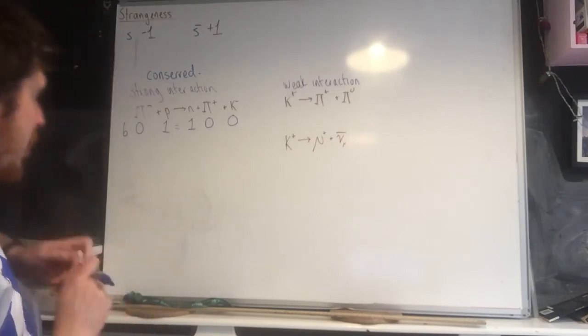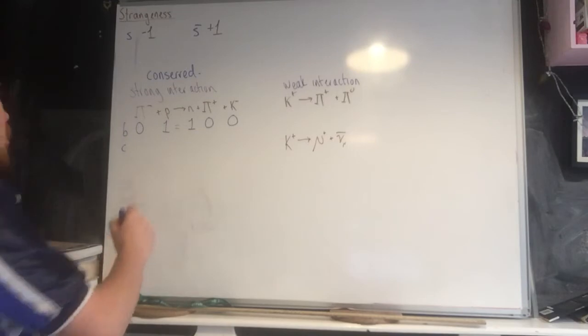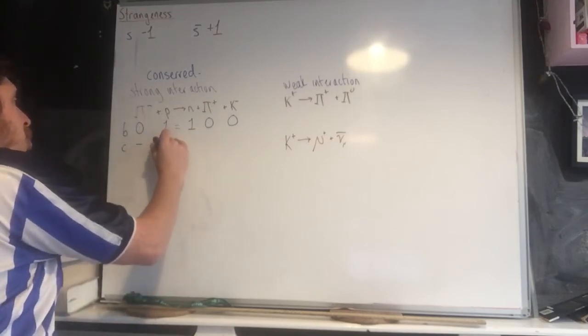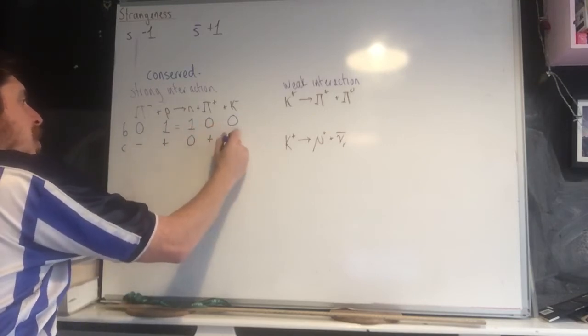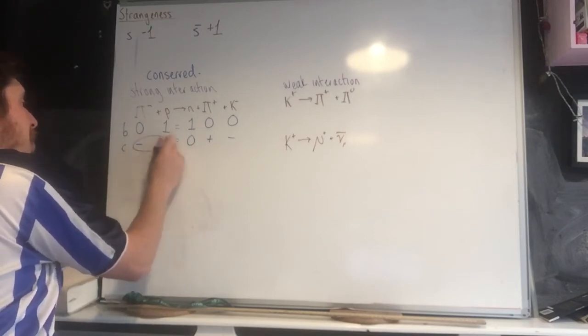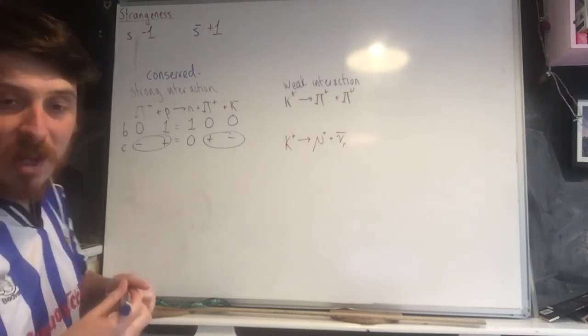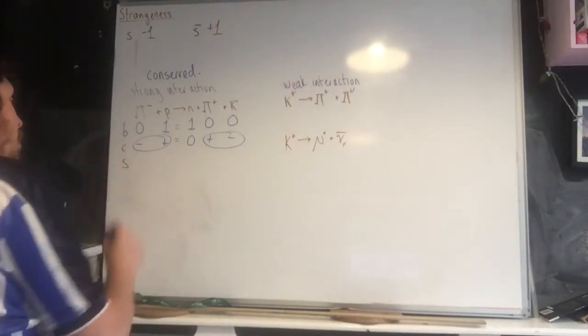If we look at charge, we've got negative charge, positive charge, neutral charge, positive charge, negative charge. Positive and negative cancel, equals zero. Positive and negative cancel, equals zero. So charge checks out as well. But the problem with this reaction is strangeness.